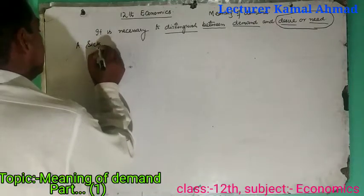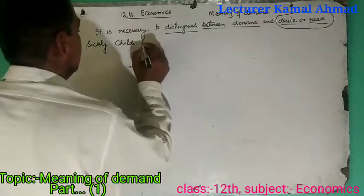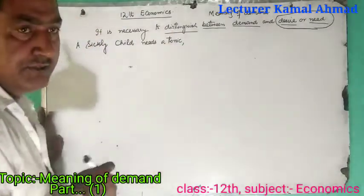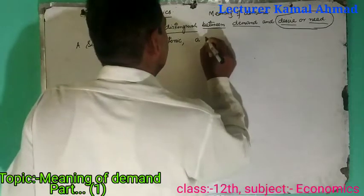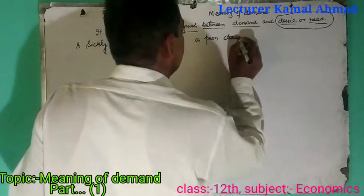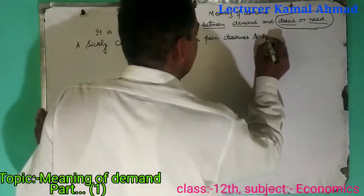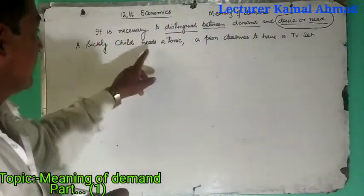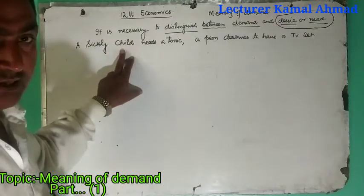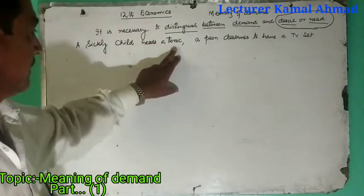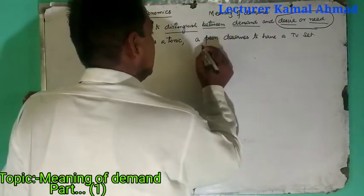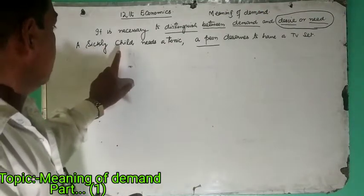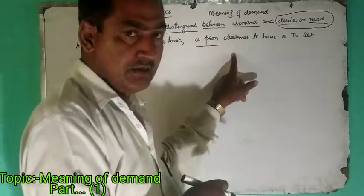A cyclical need is a tonic. For explanation, consider two persons: there is a child who is ill and needs a tonic. There is another person who is by profession a peon and desires to have a TV set. This need and desire are two different things.